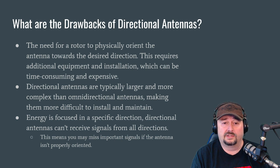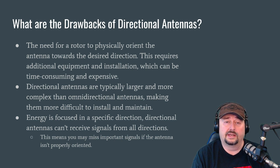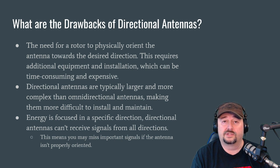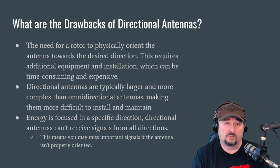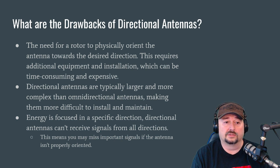Directional antennas are typically larger and more complex than many other antenna types. A Yagi, for example, has multiple elements that radiate, concentrate, and direct your energy, while a dipole is just a single wire running through the air. You can see how they're more complex — more parts — and these parts move when you're using a rotor, making installation and maintenance more difficult.